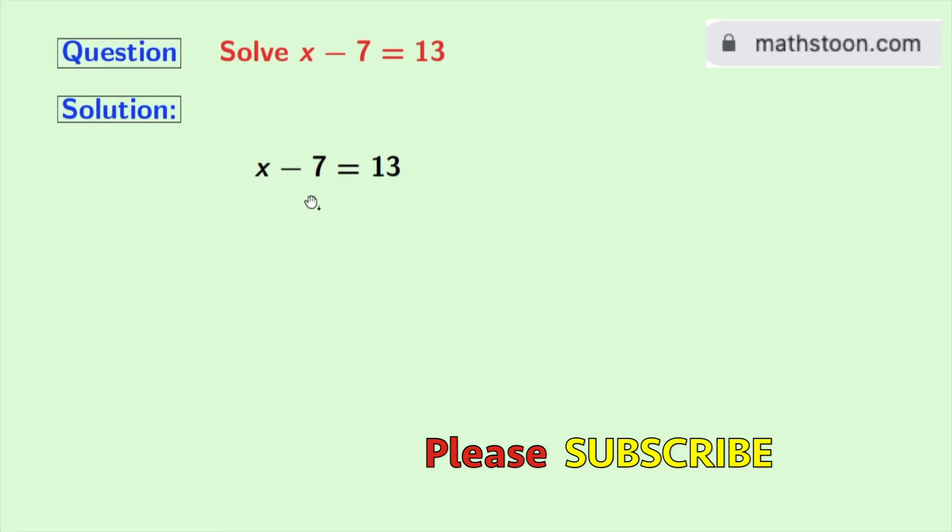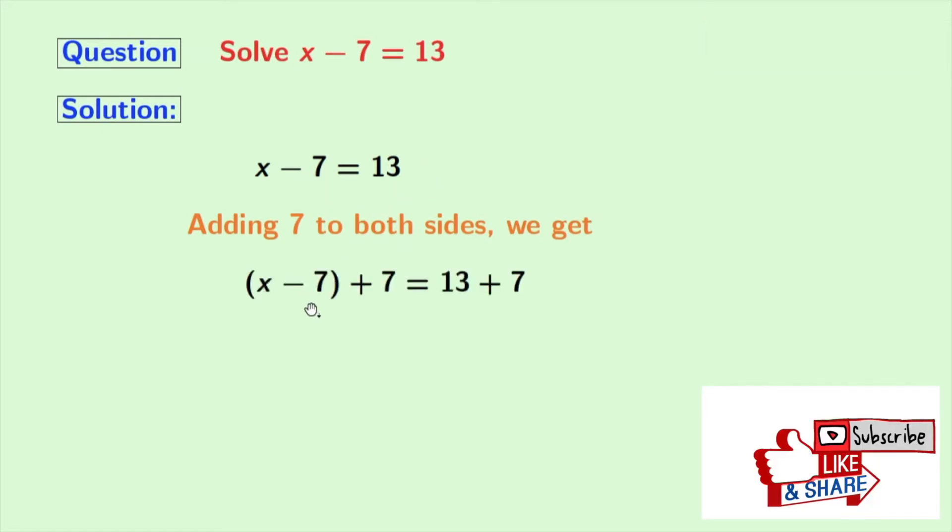To do so, we will add 7 to both sides. Look that if we add 7 to both sides, we get x minus 7 plus 7 is equal to 13 plus 7.